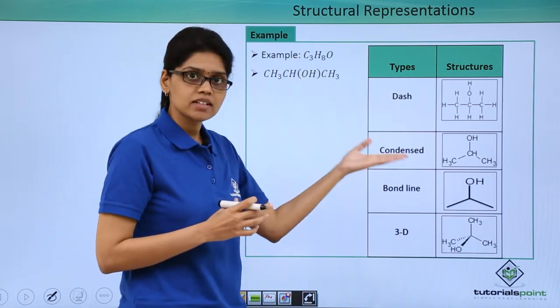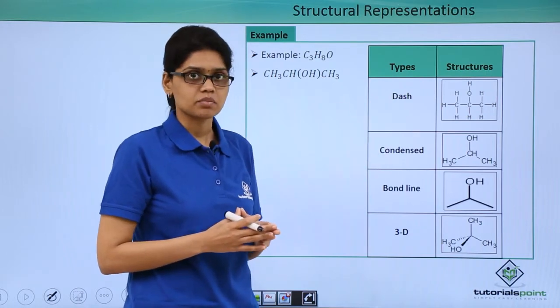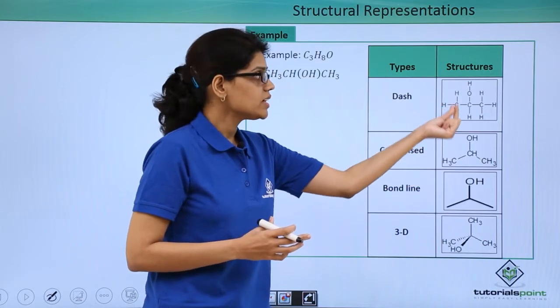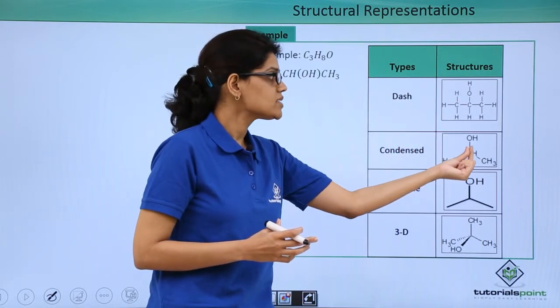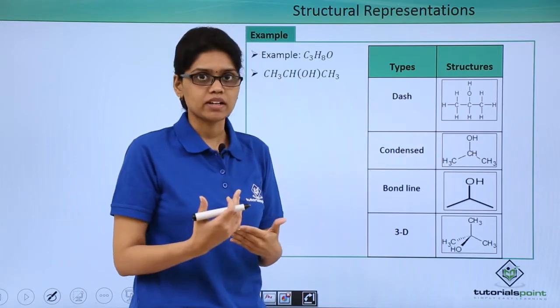If we try to represent this using condensed structure, how does it differ as compared to dash representation? Here we are essentially avoiding all the CH bonds and we are representing only CC bonds and C with other functional groups or hetero atoms.